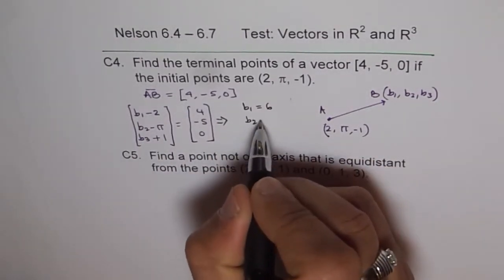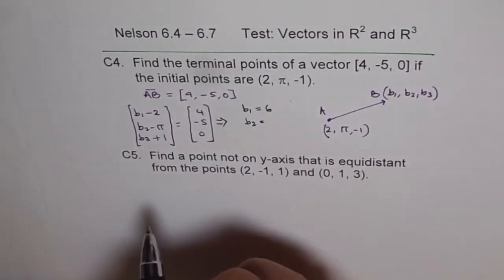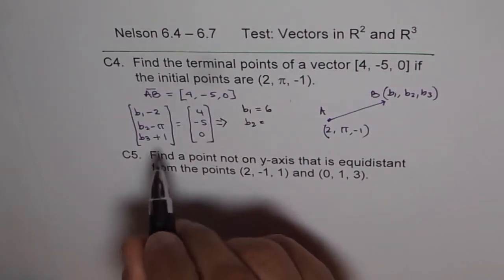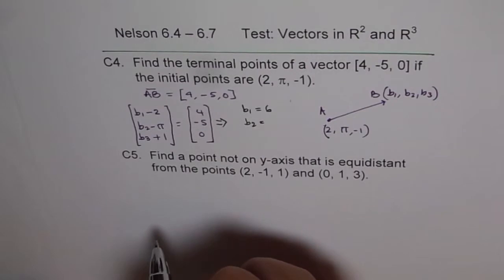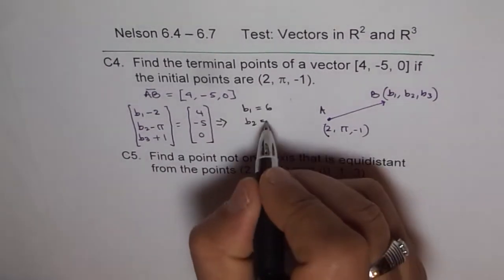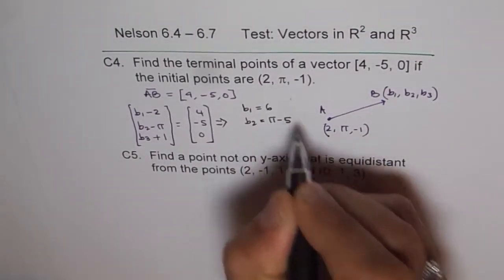b₂ should be how much? Now, this is where sometimes there could be a confusion. π is a real number, and therefore, we can use it on R³, the set of real numbers. So b₂ is -5 plus π, so we can write π minus 5.